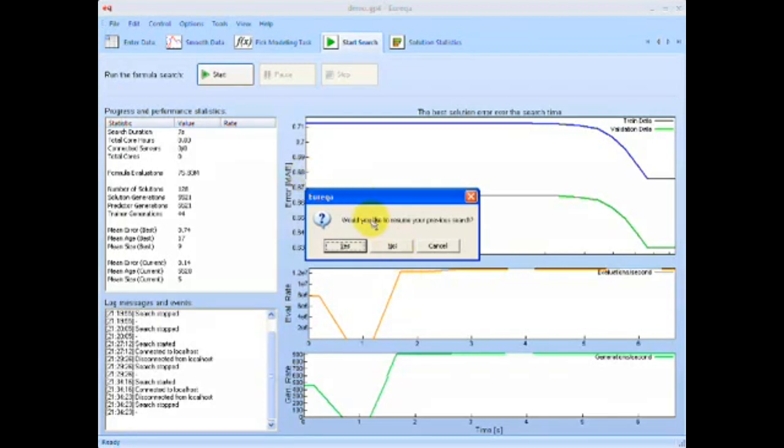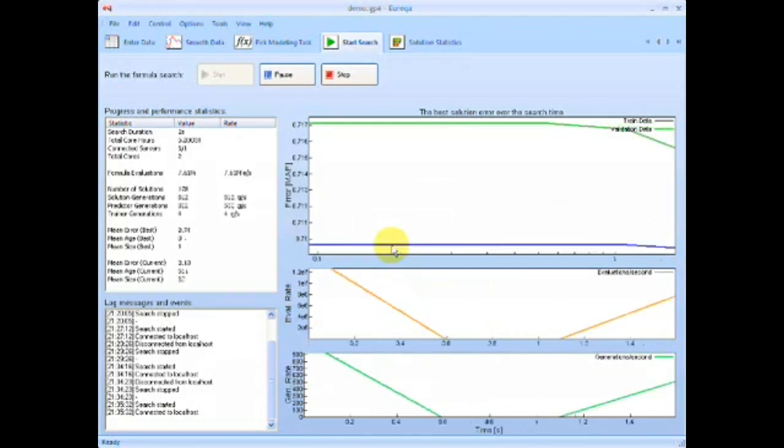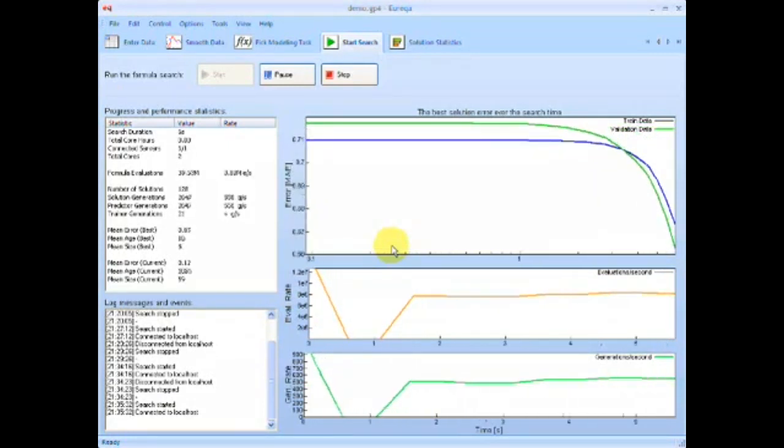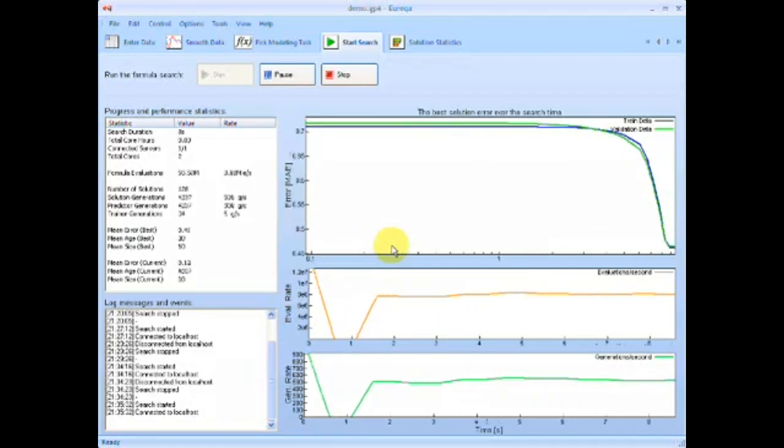So after that's done, it'll ask us would I like to resume my previous search, and no, I don't want to, I want to start a new one. So now we're going to start looking for a model of the second derivative of the acceleration of the pendulum's angle.